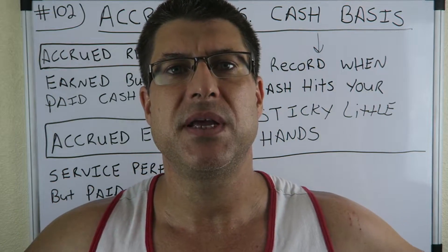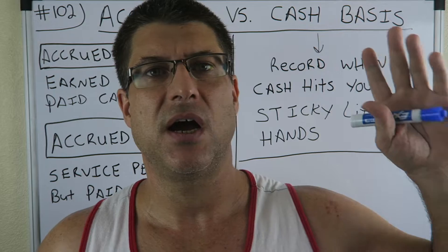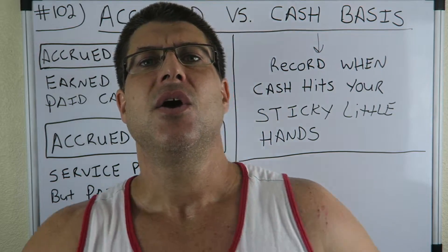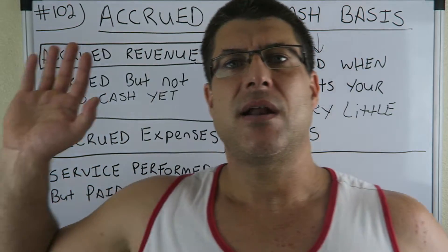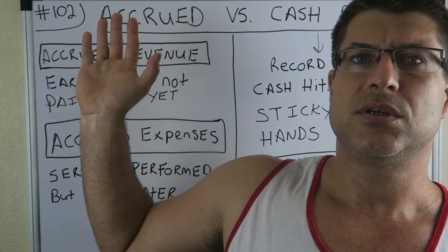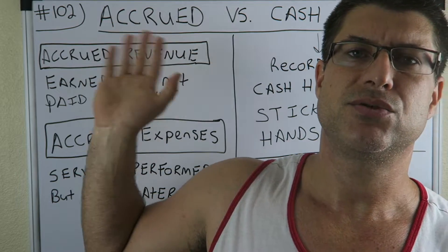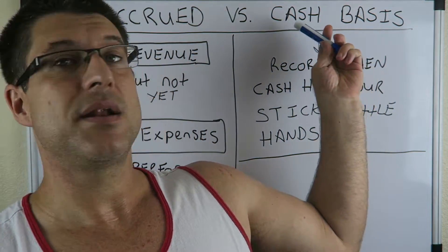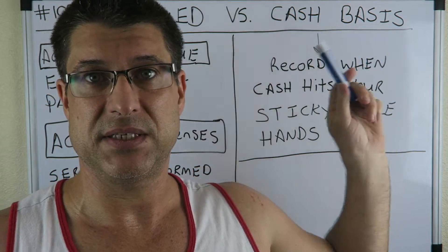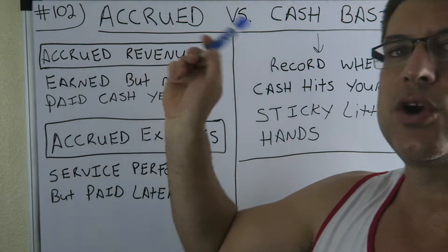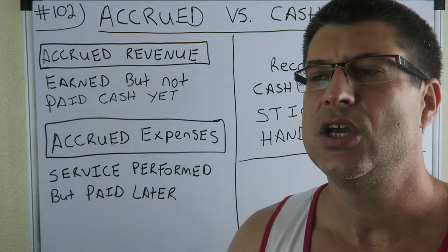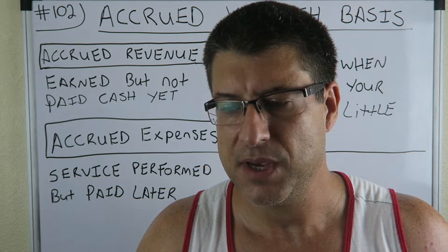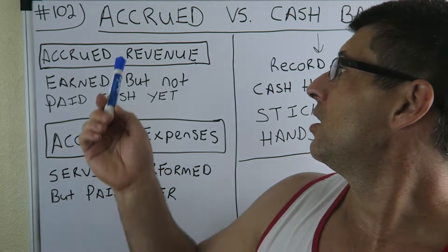Bigger companies follow GAAP — generally accepted accounting principles. A lot of bigger companies use accruals, meaning they have accrued expenses and accrued revenues. Smaller companies tend to use cash basis. With accruals, you accrue revenues and expenses using the matching principle.